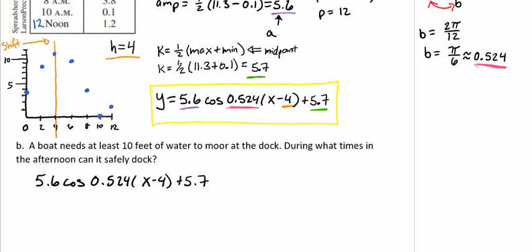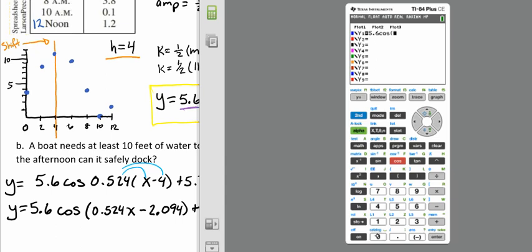We're going to distribute that 0.524, which gives us y equals 5.6 times the cosine of 0.524x minus 2.094 plus 5.7. That's what we're going to plug into our graphing calculator. So 0.524x minus 2.094, close parentheses, plus 5.7.